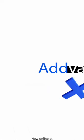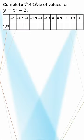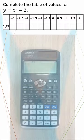Generating a table of values with the Casio ClassWiz. Complete the table of values for y equals x squared minus 2.